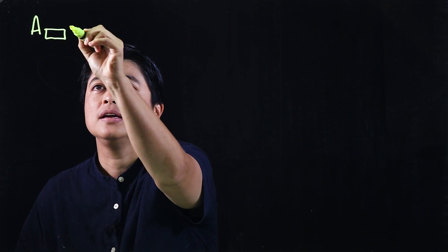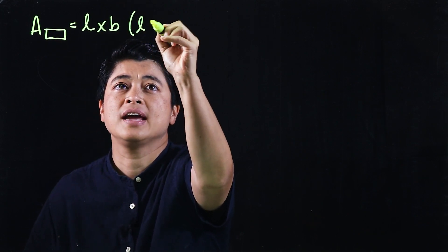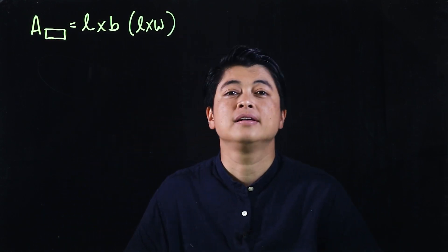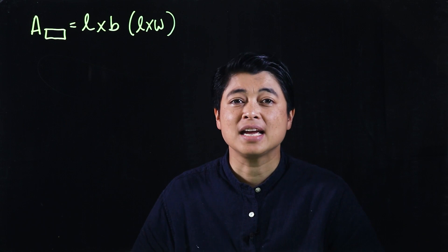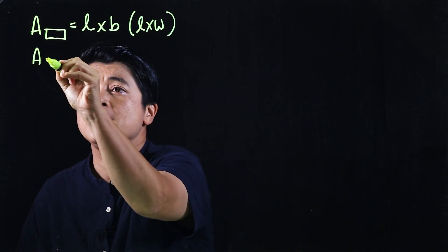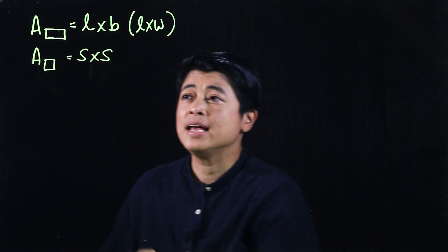Area of a rectangle is length times breadth (also length times width). The book uses breadth, so for consistency I'll also use breadth. The area of a square is side times side.